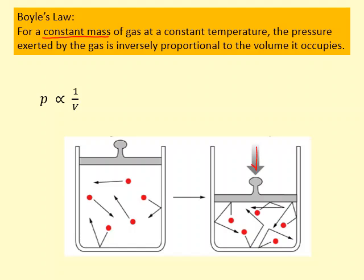And secondly, the temperature is constant. Normally when you press down on a piston like this, the temperature goes up. So what we need to do is do it very slowly so the temperature doesn't increase much, or we need to give it enough time to cool back to the original temperature in order to use this equation.